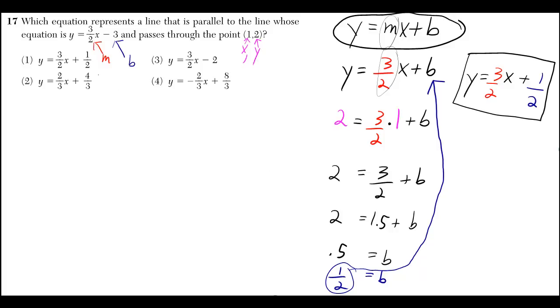Why did I do that? Because that's the way they're writing it. And then you take the 1 half and you just plug it all the way back into 3 halves x plus b, and instead you have 3 halves x plus 1 half. So that's our answer, number 1.